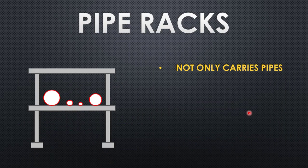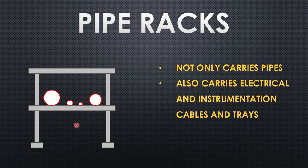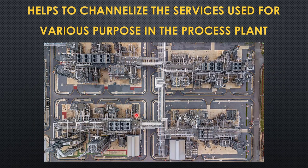Pipe rack is meant for carrying pipes, but it not only carries pipes — it will also carry electrical and instrumentation cables and cable trays. This is the typical aerial view, the top view of the plant. From this picture, you will be able to see the route of the pipe rack, distributed in such a way that all the major equipment and all areas of the plant are covered.